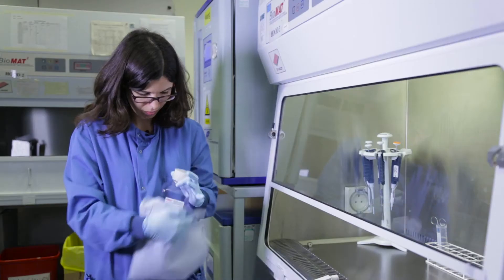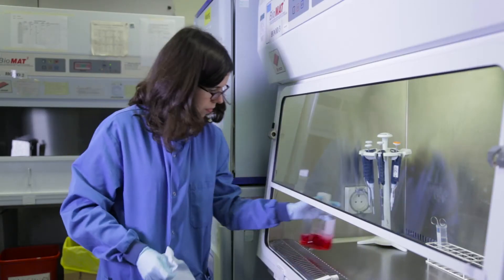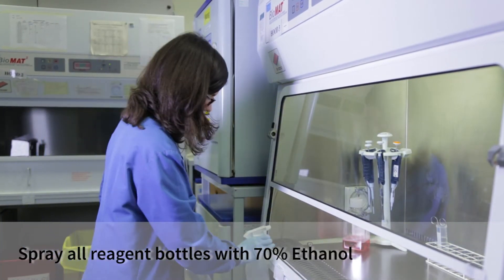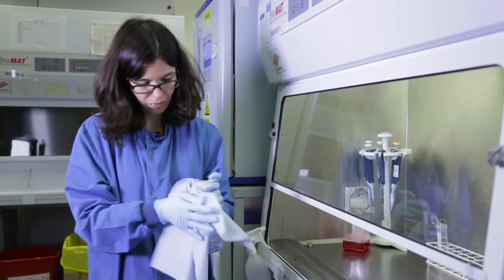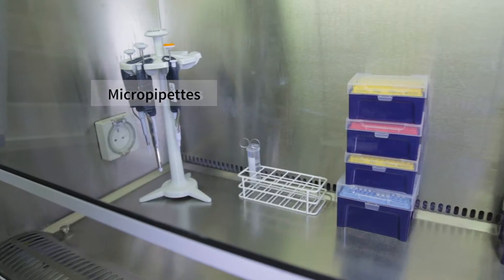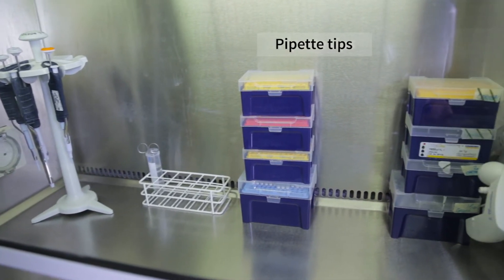In addition, all the reagent bottles to be used should be sprayed with ethanol. As everything was cleaned before introducing it into the hood, everything should be sterile. The hood normally contains pipettes and tips, which are sterile as long as they are kept inside the hood. Now that everything is clean, we are ready to start our TC culture work.